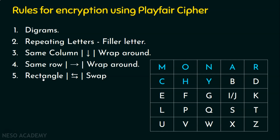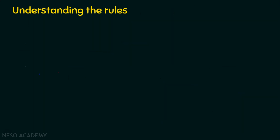If the alphabets in the digram are in a different row and different column — for example, CS — C is in one row and S is in another, and they are also in different columns. In this case, we create a rectangle and then swap to generate the ciphertext. We are going to see this now by doing the encryption process.